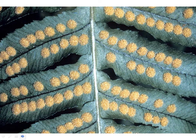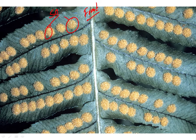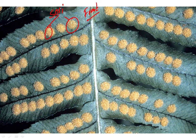On the abaxial side of the frond, we find sori — clusters of sporangia. There are really a lot of sporangia: each sporangium has very few spores, but there are hundreds at least of sporangia in each sorus, and many sori on the back of a typical leaf. You can see why the word 'heap' is very appropriate here — they do look like little heaps.